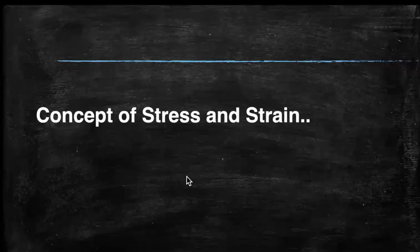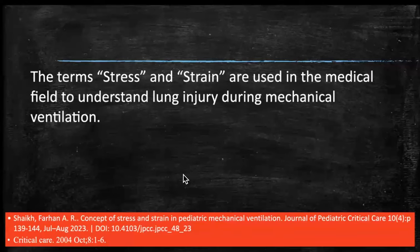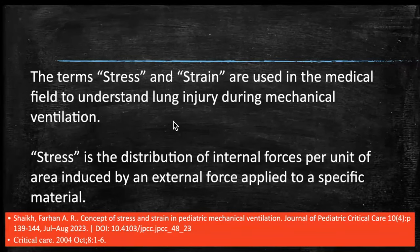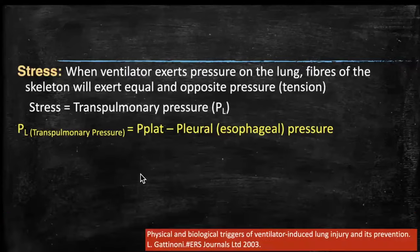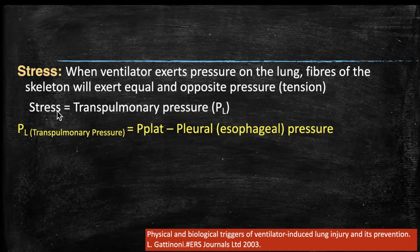Now we come to the concept of stress and strain. These terms are used in the medical field to understand injury during mechanical ventilation. Stress is the distribution of internal forces per unit of area induced by an external force applied to a specific material. Basically, stress is the pressure applied on the lungs and elastic fibers, with an equal and opposite pressure — tension. Stress is essentially the trans-pulmonary pressure.